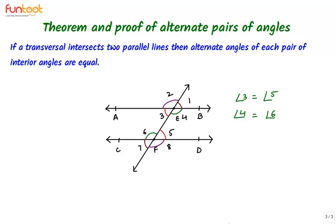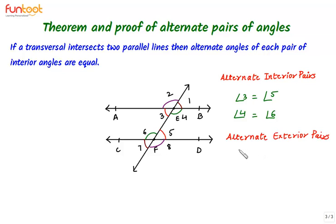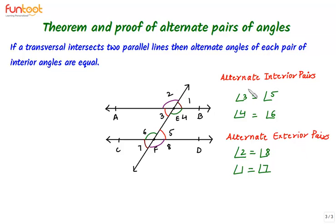Using the knowledge that corresponding angles are equal, we need to prove that interior alternate angles are equal. The pairs angle 3 & 5 and angle 4 & 6 are alternate interior pairs. Similarly, we can have alternate exterior pairs: angle 2 & 8 will also be equal, and angle 1 & 7 will also be equal. The same approach will be used for proving both alternate interior pairs and alternate exterior pairs as equal.